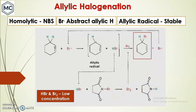When there is an excess of Br₂, it can react with the double bond, which is undesirable. So you need only a very low concentration of Br₂. NBS provides HBr and Br₂ at very low concentration, so you get the allylic halogenated product selectively. The allylic radical is highly stable as it is resonance-stabilized. The bromine radical produced can again propagate the reaction, making this a chain reaction.